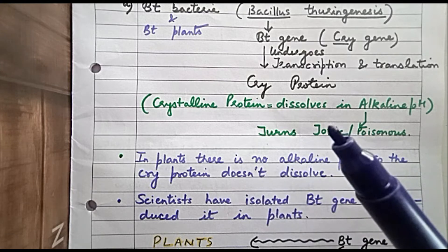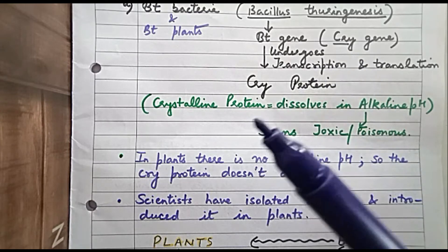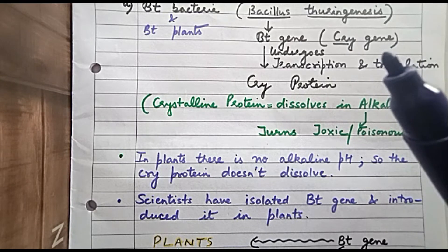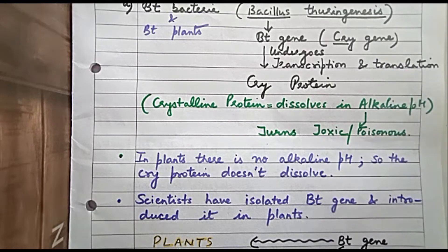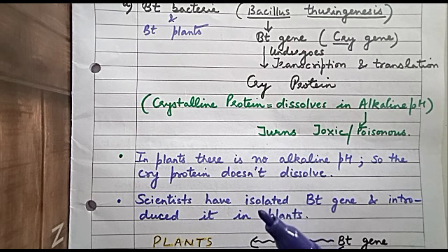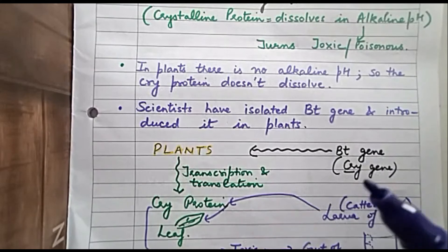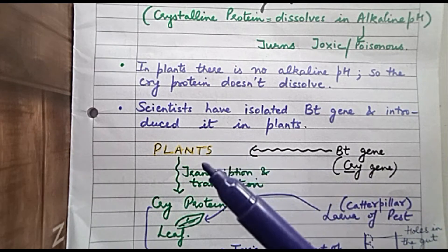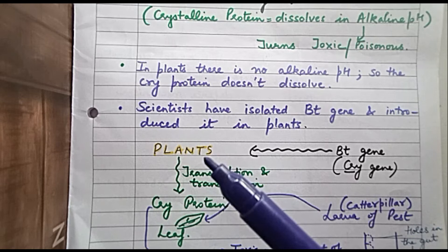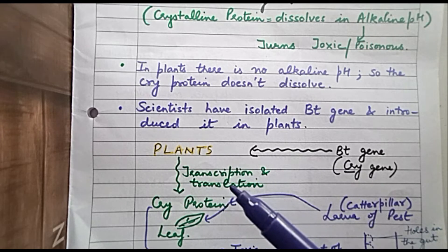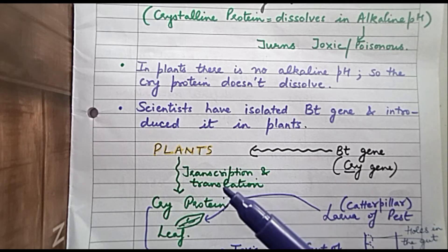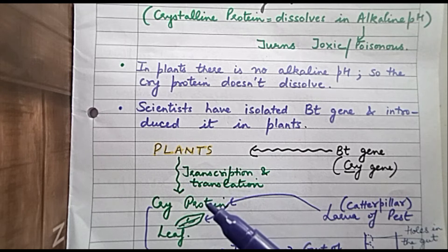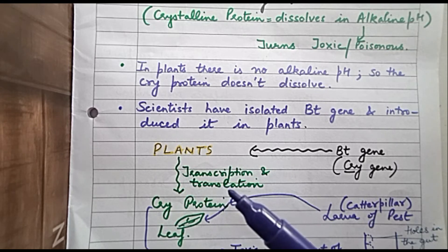So the cry gene, which produces crystalline protein, can safely be introduced into plants. This is exactly what scientists did — they isolated the Bt gene and introduced it into plants. As a result, the gene naturally undergoes transcription and translation inside the plant and produces cry protein.